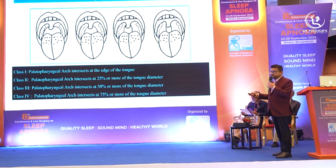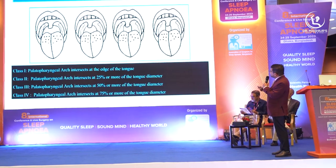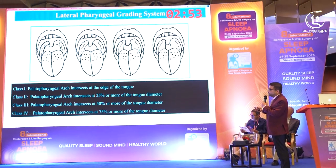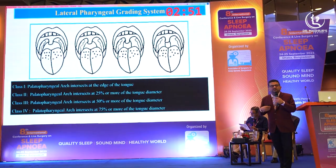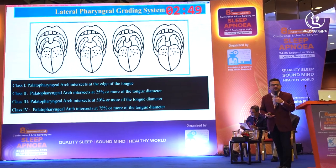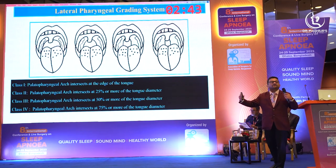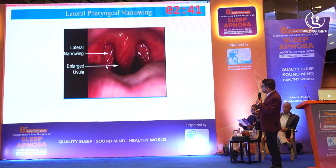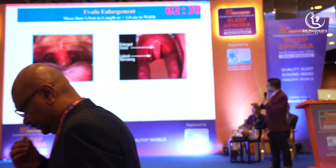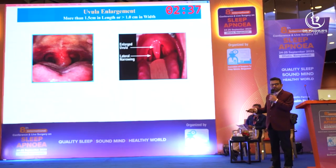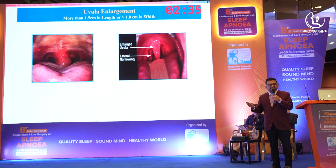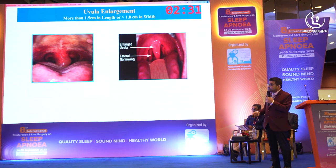Then, lateral pharyngeal wall grading — if the lateral pharyngeal wall is grade 4 and we are doing only a simple pharyngoplasty, this patient will not benefit. This patient may need expansion of the pharynx as well. If the patient has a big, thick uvula, we have to do something for the uvula also. Simple tonsillectomy or septoplasty will not help — we have to address the uvula.